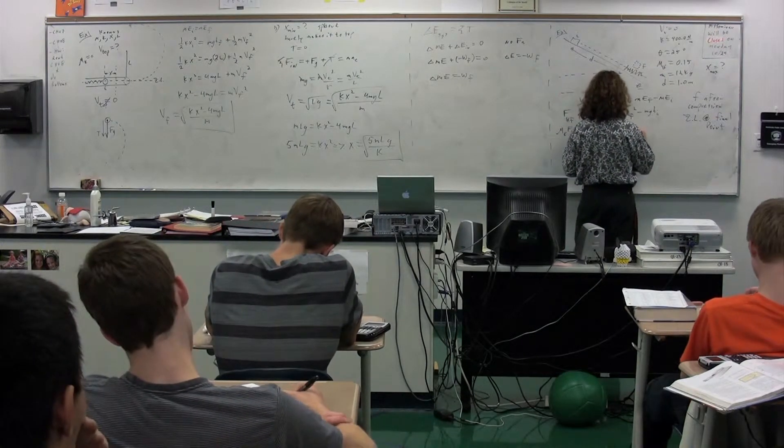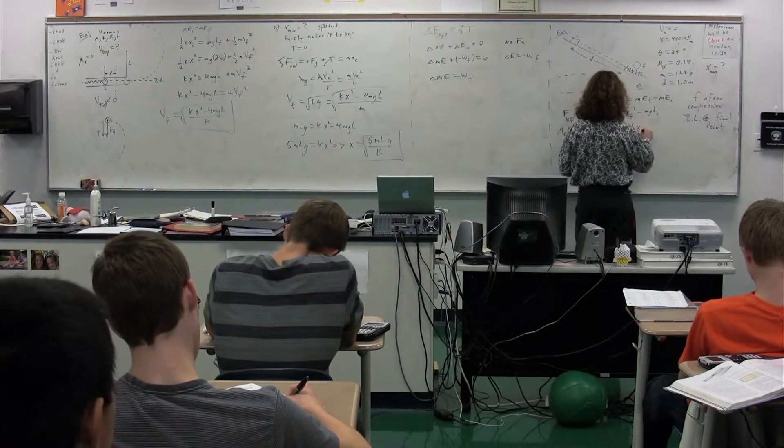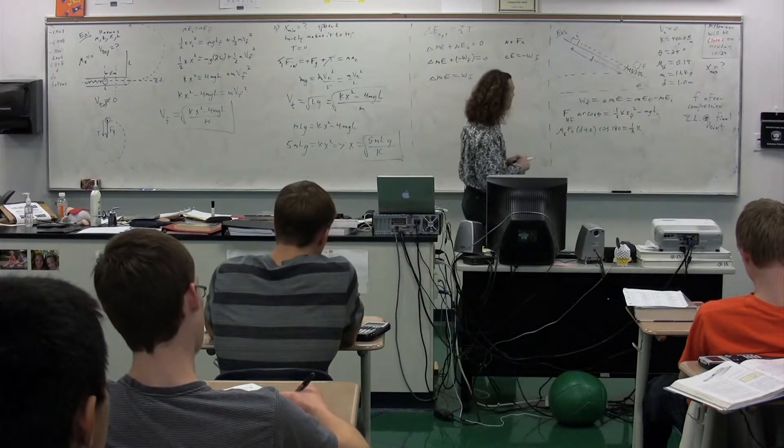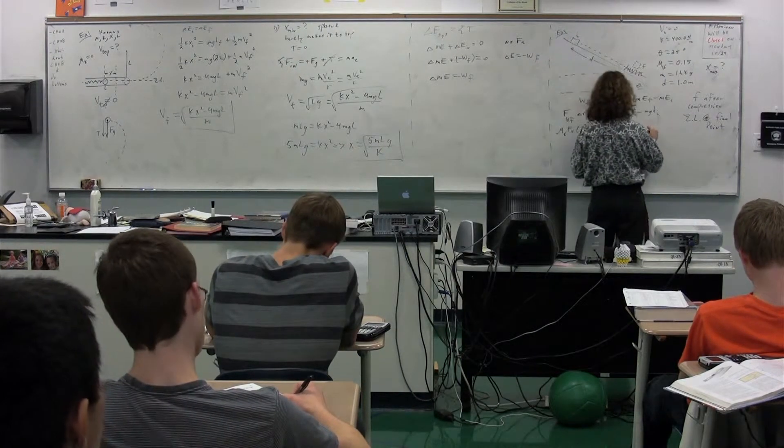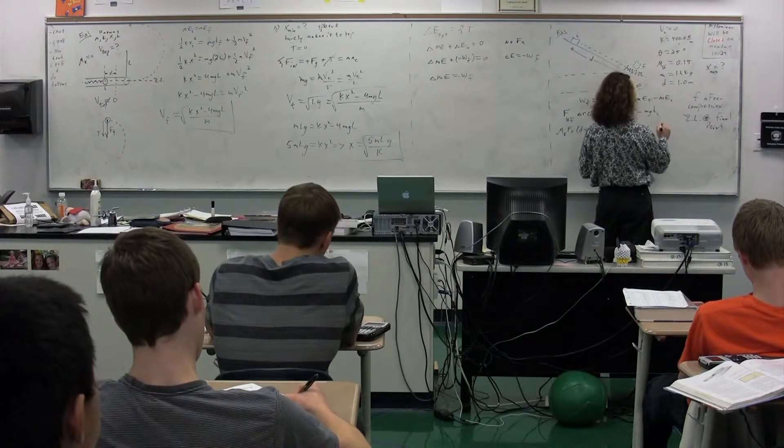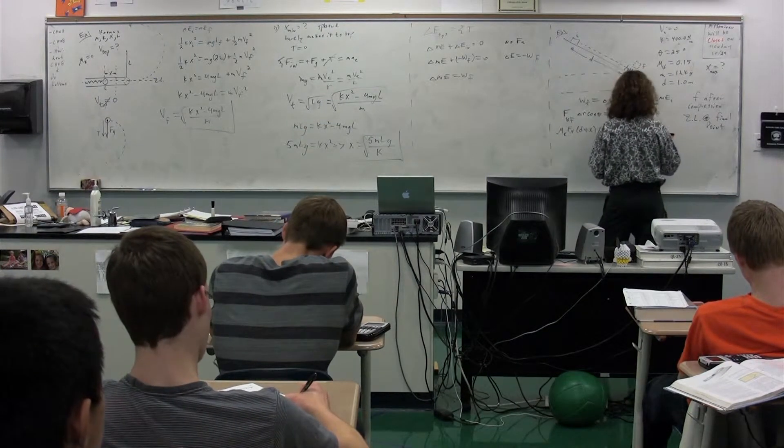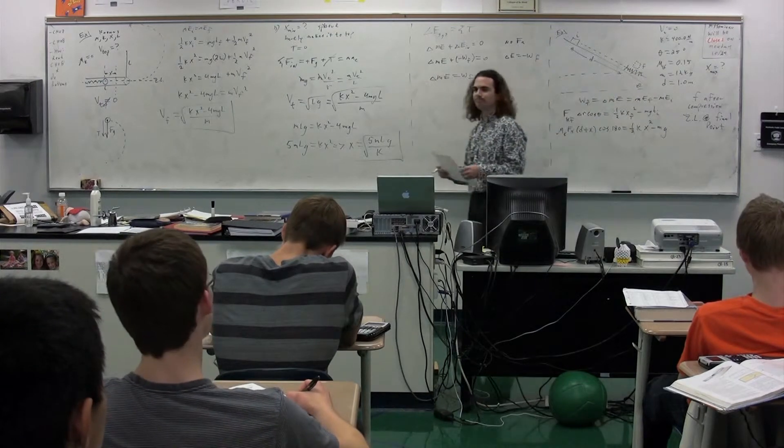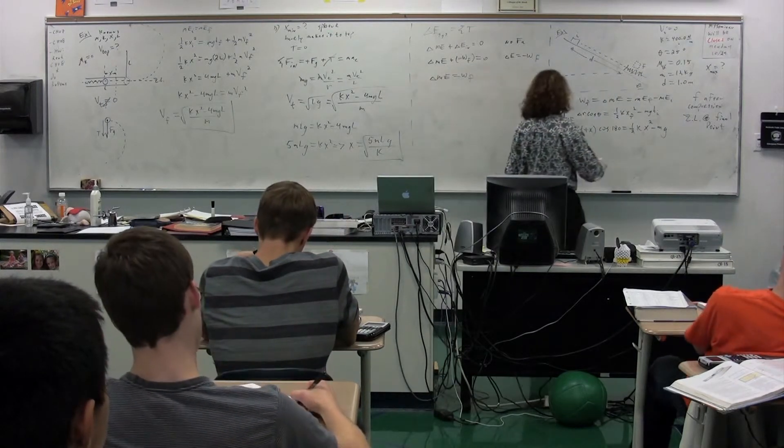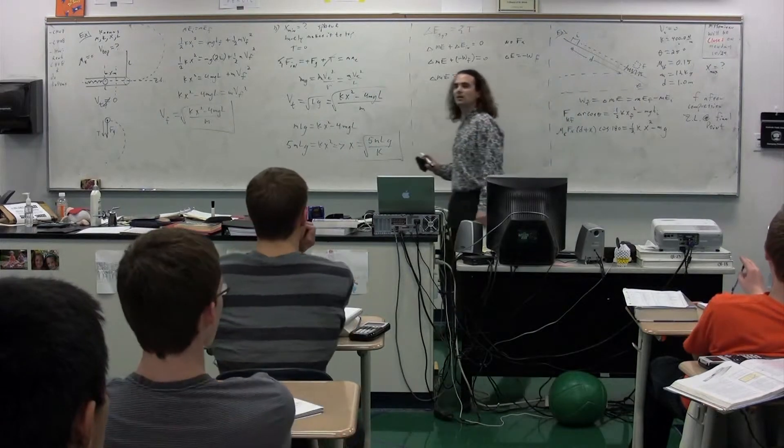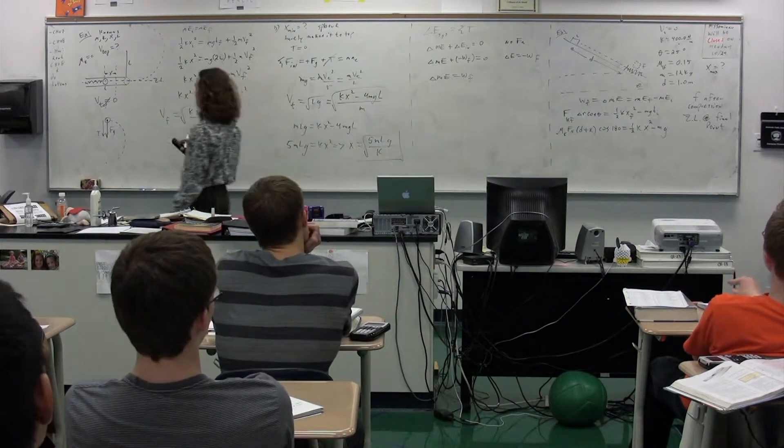Equals one half. The spring constant, we know. Position or X final is just going to be X. That's what we're solving for. Minus the mass. We have that. G times height initial. Height initial, Loki.